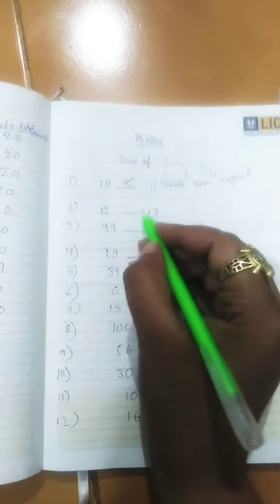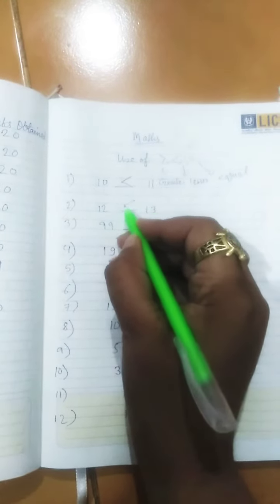Here, 12 dash 13, that means 12 is also less than 13. Here 99 is big, 98 small, that means 99 is greater than 98.